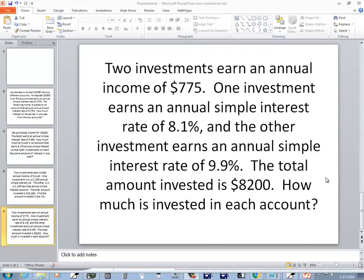Two investments earn an annual income of $775. One investment earns an annual simple interest rate of 8.1% and the other investment earns an annual simple interest rate of 9.9%. Total amount invested is $8200. How much is invested in each account?